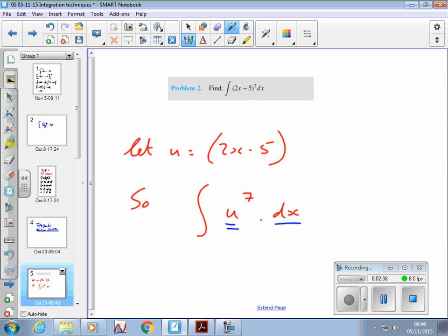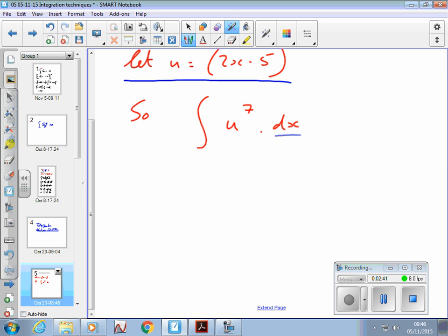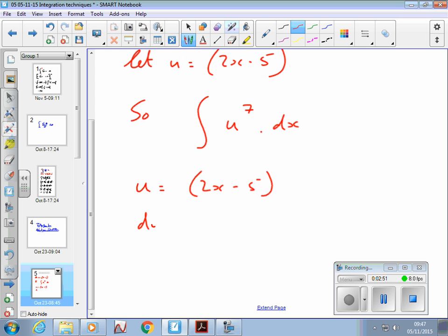So what I do with u is 2x minus 5, as I've written, and I differentiate it. du by dx. Make sure your u's look like u's and not y's. I've come across this problem before. And if I differentiate that, what do I get? I differentiate 2x minus 5. That's 2. du by dx equals 2.